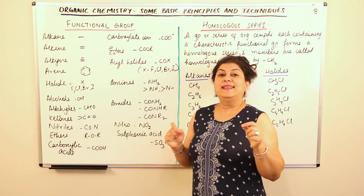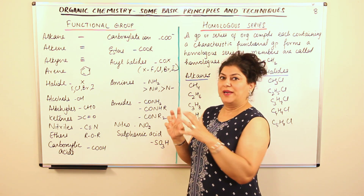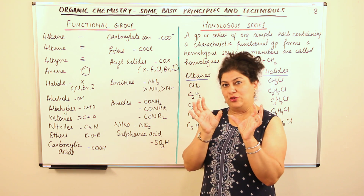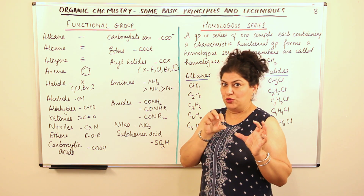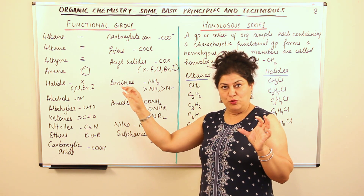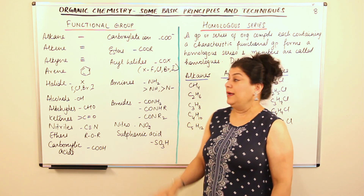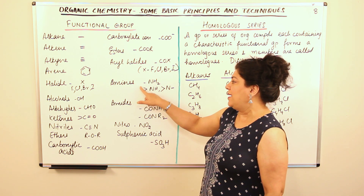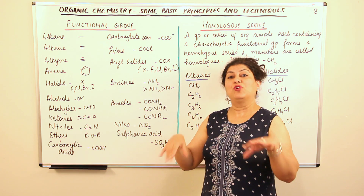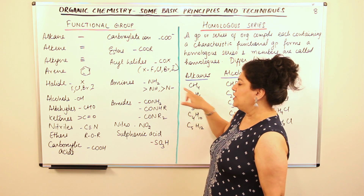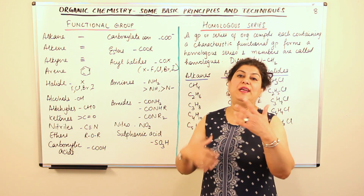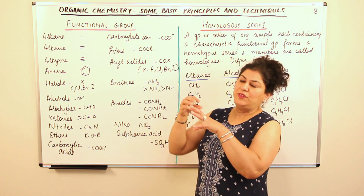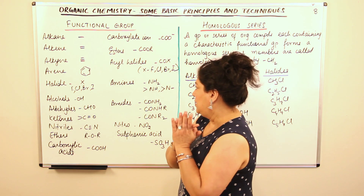Now come to amines. Ammonia is NH₃. When one of the hydrogens of ammonia is replaced by an alkyl group, you get an amine — NH₂ — and that NH₂ is the functional group of the hydrocarbon. You can replace two hydrogens and get two alkyl groups, giving R-NH-R. Or all three hydrogens of ammonia could be replaced by alkyl groups — in that case, nitrogen forms three bonds with three different carbon atoms. Amines, basically, are when one of the hydrogens is knocked off ammonia and it joins the hydrocarbon to form an amine.